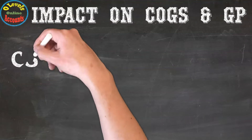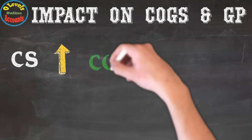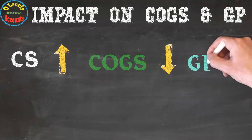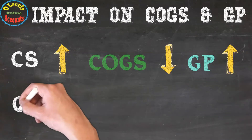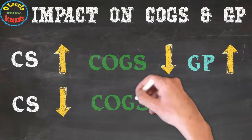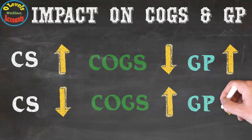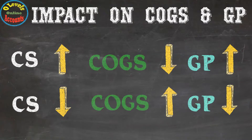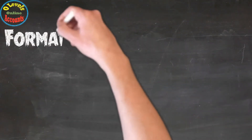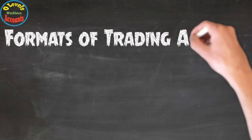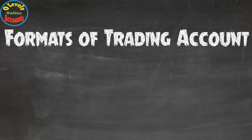Third component — closing inventory: when closing inventory increases, cost of goods sold decreases, but gross profit increases. When closing inventory decreases, cost of goods sold increases, but gross profit decreases. Closing inventory has an indirect relationship with cost of goods sold but a direct relationship with gross profit.